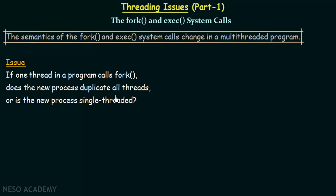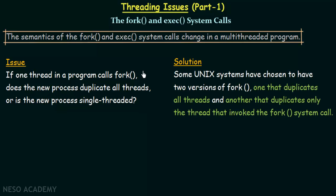The solution is that some Unix systems have chosen to have two versions of fork. One version duplicates all the threads — meaning if a thread in a process invokes a fork system call, all threads in that process will be duplicated.